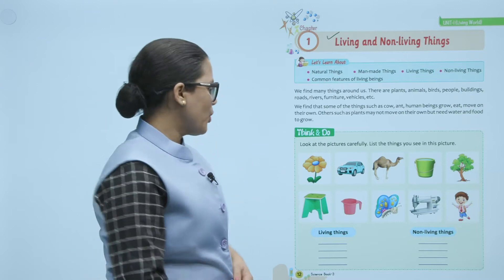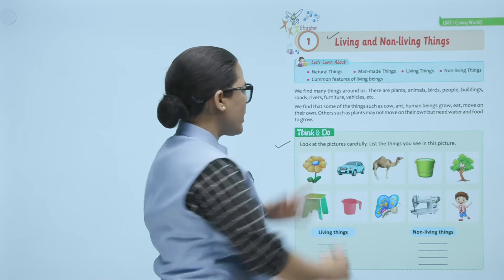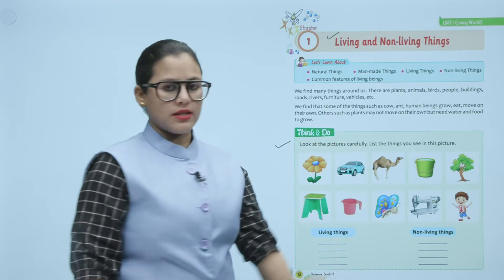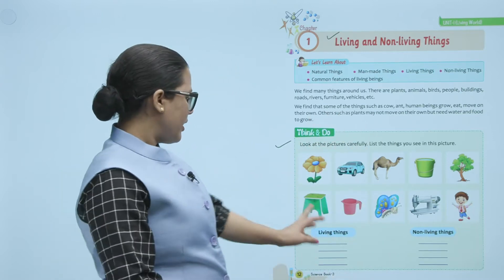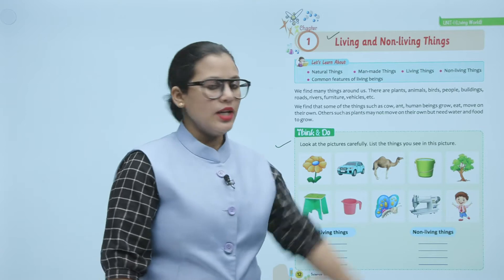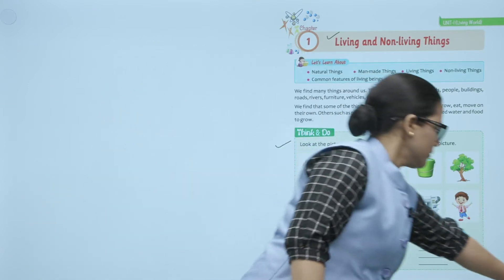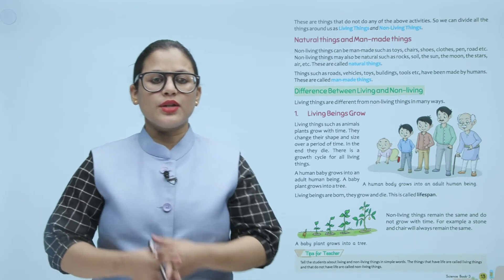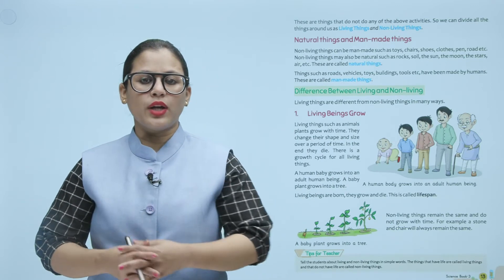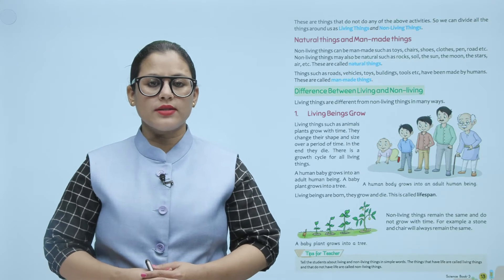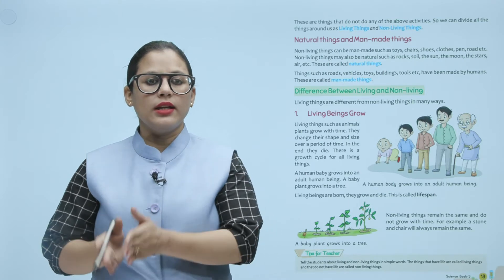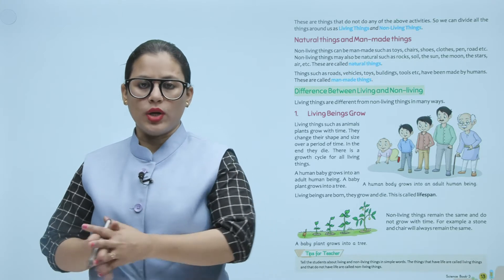Now let's see some pictures here. You have to list these things as living things and non-living things. Things that do not do any of the above activities — we can divide all things around us as living things and non-living things.